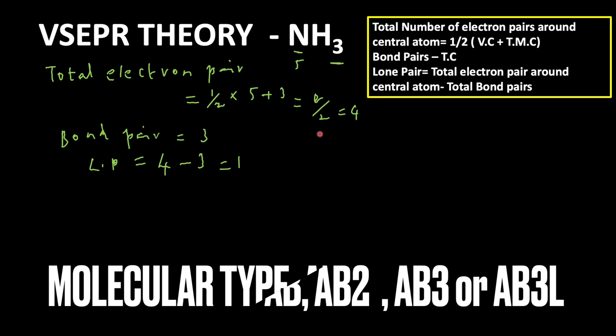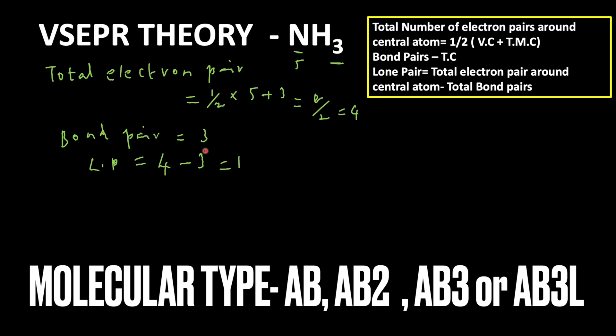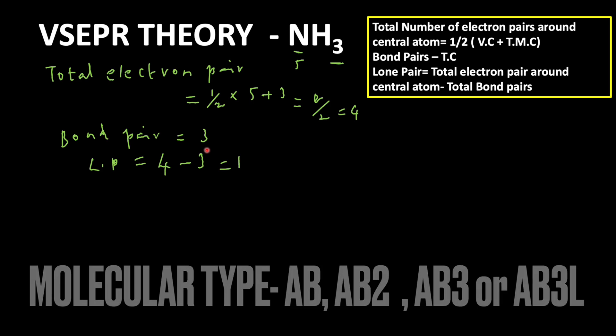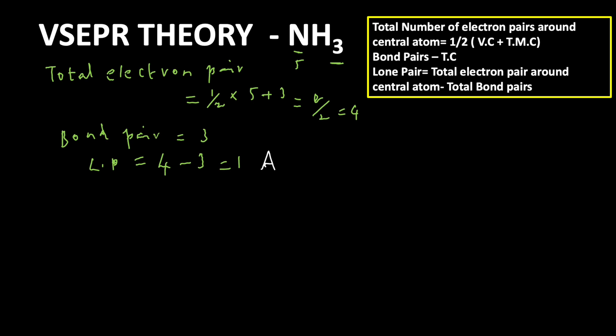Using this information we can find the molecular type. In molecular type notation, A stands for the central atom, B stands for atoms attached to the central atom, and L stands for lone pair. There is one nitrogen atom (A), three hydrogen atoms (B3), and one lone pair (L), so the molecular type of NH3 is AB3L.